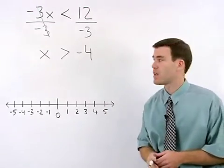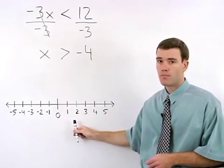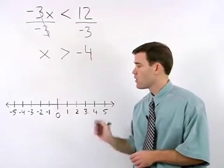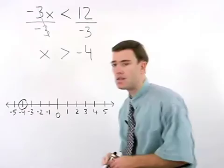Our next task is to graph x is greater than negative 4 on a number line. And to do that, we start with an open dot at negative 4.